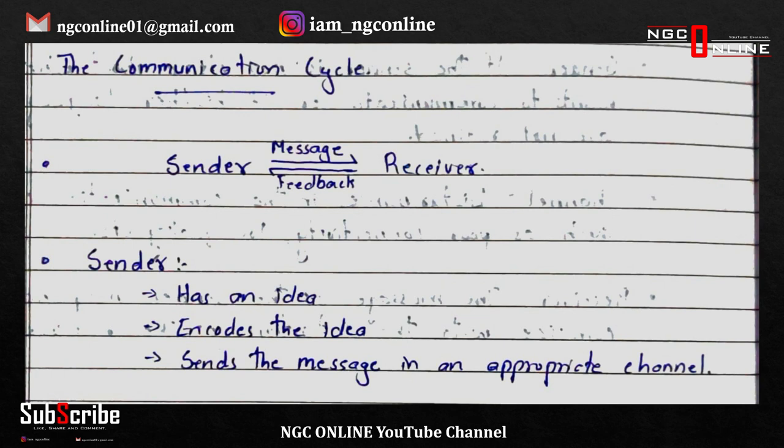We are going to talk about the communication cycle. There are two key points: one is the sender and the other is the receiver. The message travels from sender to receiver through an appropriate channel. This is a loop — a cycle of communication. We call it the communication cycle.